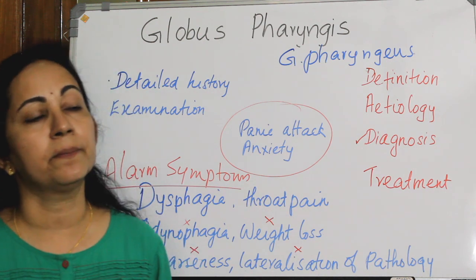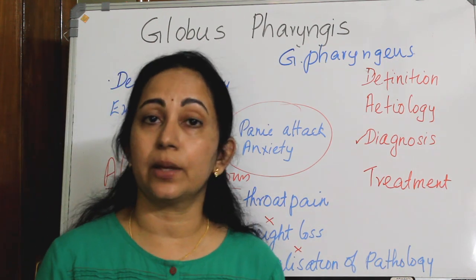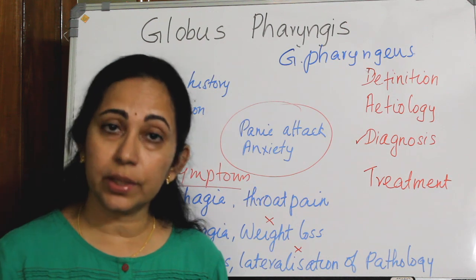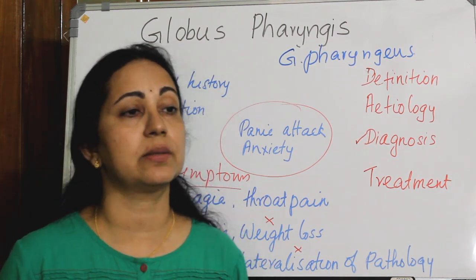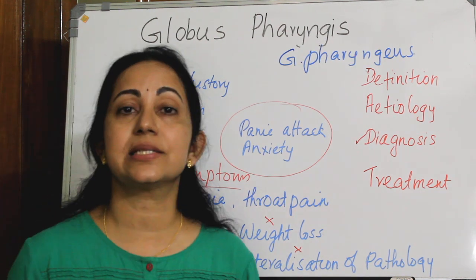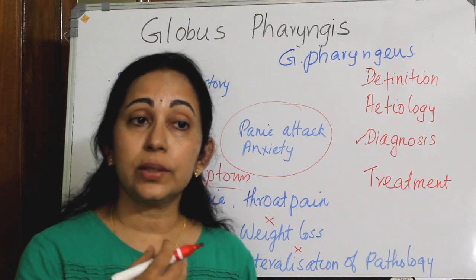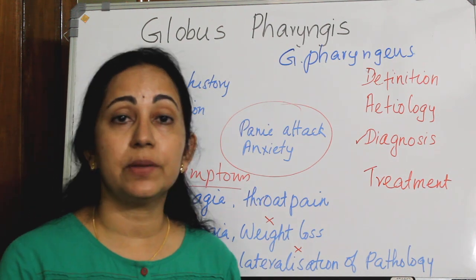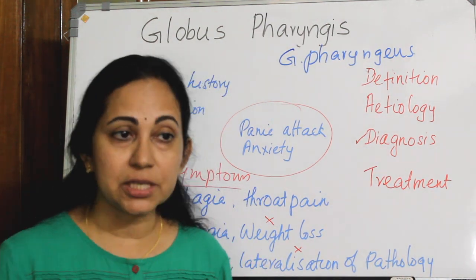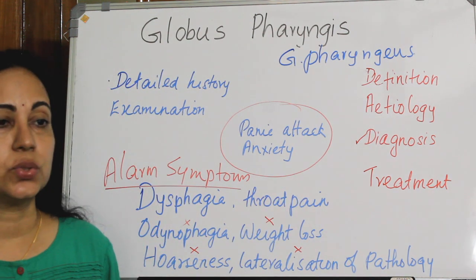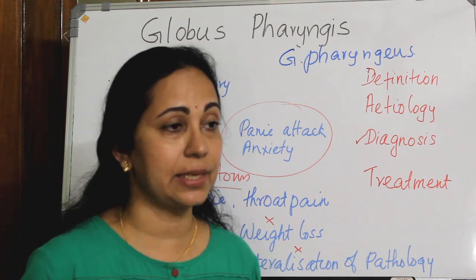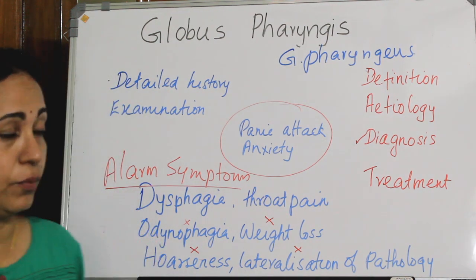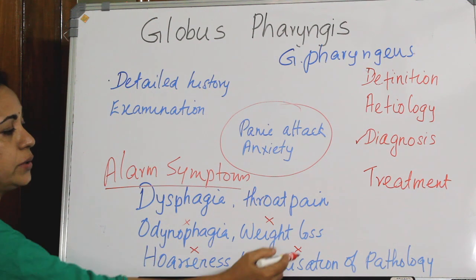A detailed head and neck examination including flexible laryngoscopy is preferred over rigid laryngoscopy under general anesthesia. Barium swallow, if performed, will be normal in 100% of Globus cases. Extensive investigations are not needed and may actually make the patient more anxious or medicalize the symptom. A detailed history, careful examination, minimal investigations, and a high level of suspicion are all that is needed for diagnosis.